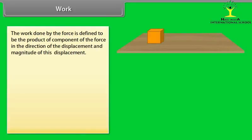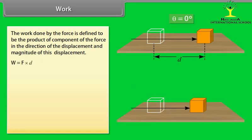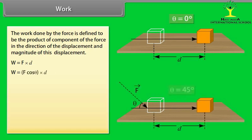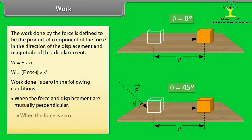Work. The work done by the force is defined to be the product of component of the force in the direction of the displacement and magnitude of this displacement. W = F·D or W = F cos θ·D. Work done is zero in the following conditions: when the force and displacement are mutually perpendicular, when the force is zero, or when the displacement is zero.